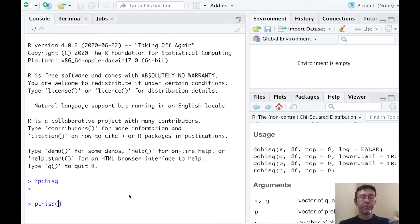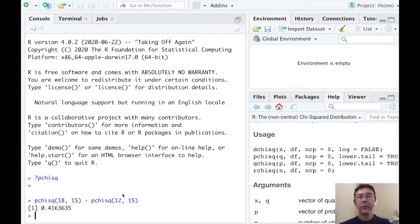In order to get the probability that x is between 12 and 18 in this chi-squared distribution, I want to take the probability of randomly getting an x value less than 18. Again, we're in a chi-squared distribution with 15 degrees of freedom. And then subtract off the probability of randomly getting a value that's less than 12, with again, 15 degrees of freedom. In this case, 0.4163.